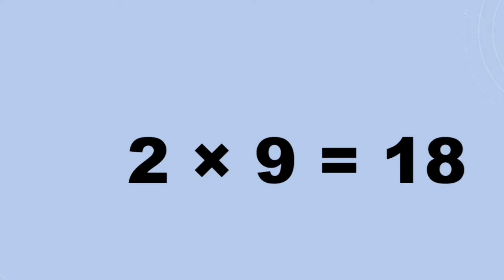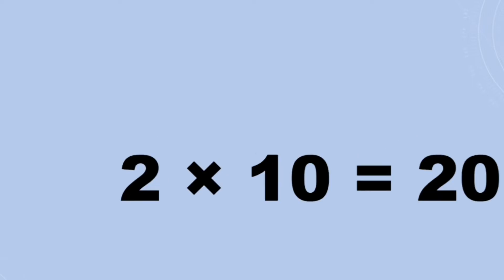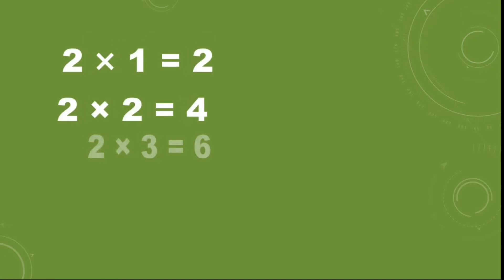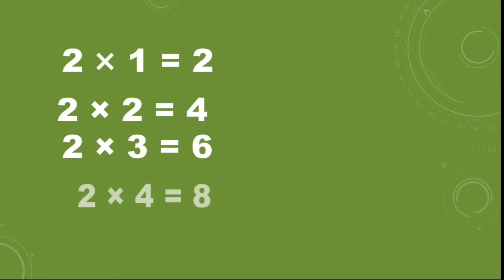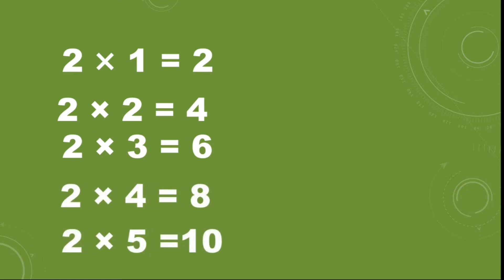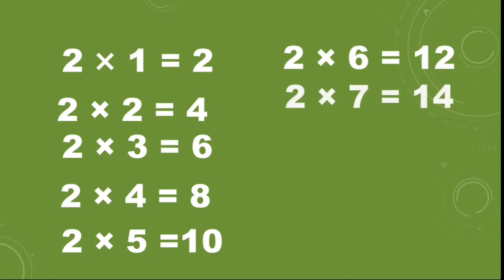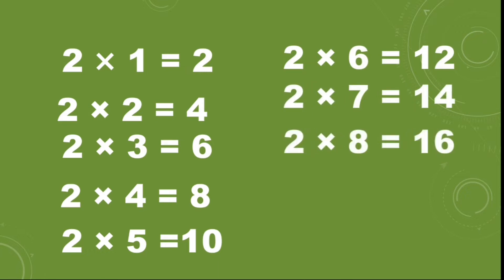Two ones are two, two twos are four, two threes are six, two fours are eight, two fives are ten, two sixes are twelve, two sevens are fourteen, two eights are sixteen, two nines are eighteen, two tens are twenty.